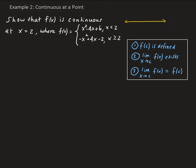So let this be your x-axis. Here's the value of 2 — this side is negative, and this side is positive. As x is approaching 2 from the left, that means x is less than 2, so we want to use this part of the function. So we have the limit as x approaches 2 from the left of x squared minus 4x plus 6.